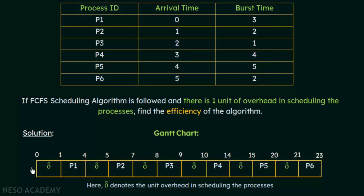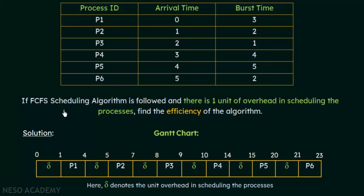Let us see how we have formed this Gantt chart. Processes P1 to P6 arrive at these units of time: P1 at 0, P2 at 1, P3 at 2, P4 at 3, P5 at 4, and P6 at 5. So the order of arrival is P1, P2, P3, P4, P5, P6. Following FCFS, P1 should be the first to be served and given the CPU first.